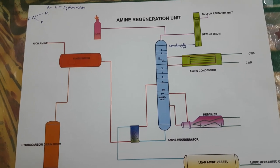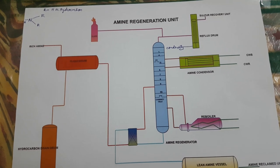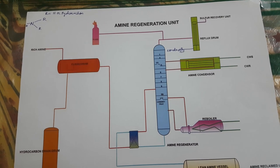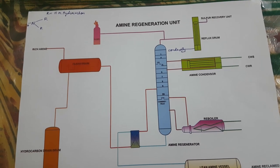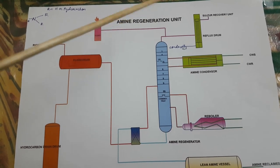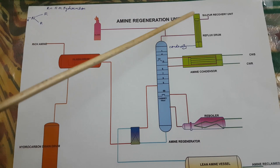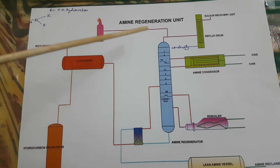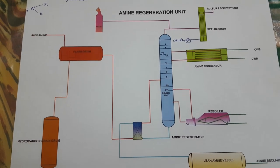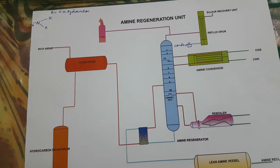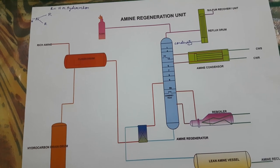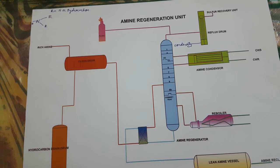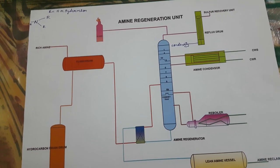Hello guys, good morning, welcome to my channel Chemical Dairy. In this video I would like to explain you about the amine regeneration unit. Amine regeneration unit is very important in petrochemical plant and petroleum industry for the removal of hydrogen sulfide gas, which goes to the sulfur recovery unit. Amine regeneration unit, sulfur recovery unit, and sour water stripper are very important units. There are a lot of jobs about amine regeneration unit operator, field operator, and DCS engineer.